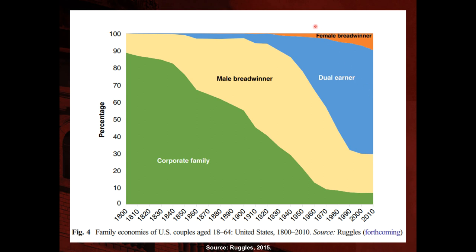Around that same time there is also an increase in female breadwinner families, including families where the mother is the only one present in the household without any father present — resources are brought solely by women. Nowadays, however, most families have the dual-earner characteristic, with both father and mother bringing resources to the house.